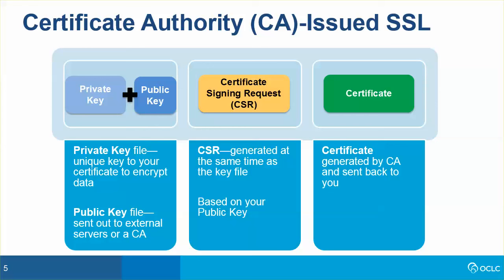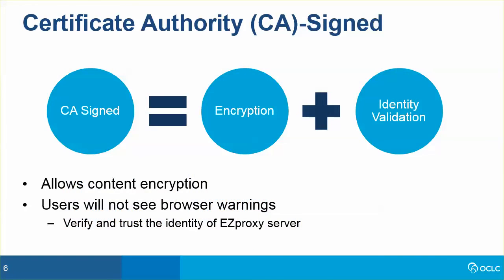The certificate is generated by the Certificate Authority and sent back to you. It should also be installed on your EasyProxy server, but can only be connected to your server using the key and the CSR that were used to generate that certificate. If you purchase a Certificate Authority signed certificate and install it on your EasyProxy server, it will allow content encryption and users will be able to connect to content without browser warnings. This is due to the content providers verifying and trusting the identity of your EasyProxy server based on the CA signature.